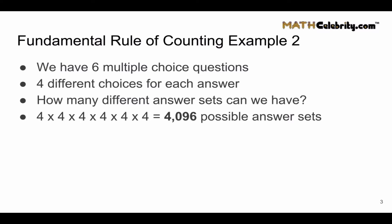How did we get that? If we have six multiple choice questions, and each question has four different possible choices — A, B, C, D — each question is independent of the last. So we multiply six questions with four possible answer types, and we get our 4,096 possible answer sets.